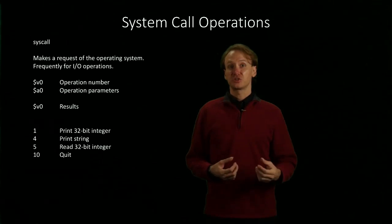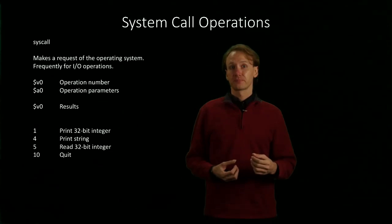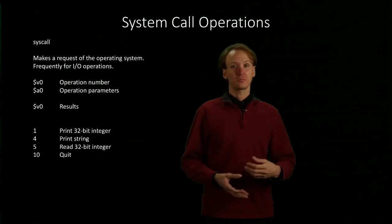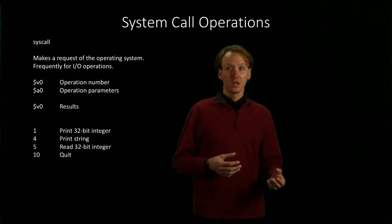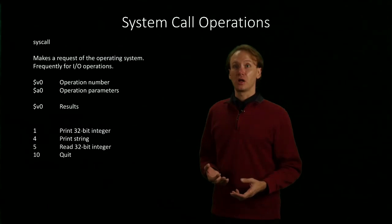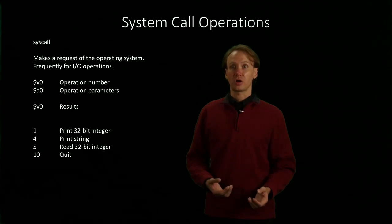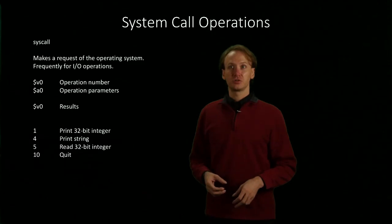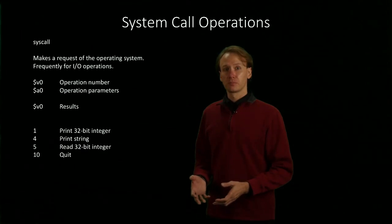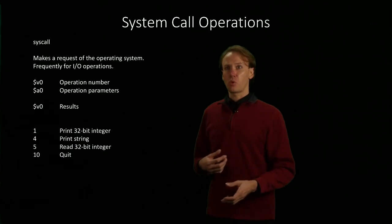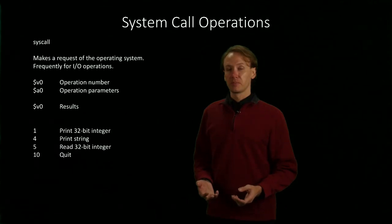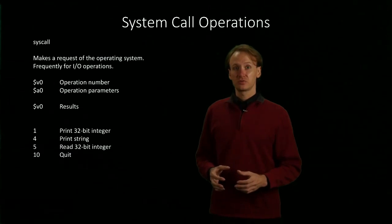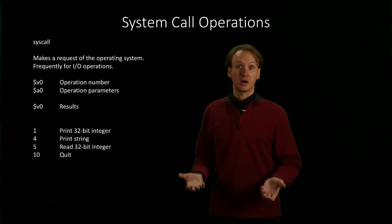Most of these operations are going to require some other parameters or have some results. If we've got some other parameters — like we want to print an integer or a string — then we're going to put those parameters into register a0. There are a couple that require register a1 as well, but the majority of the simple ones just use a0.